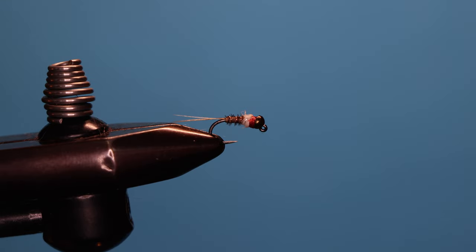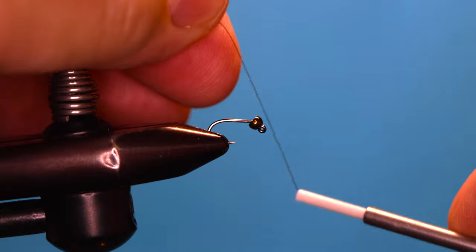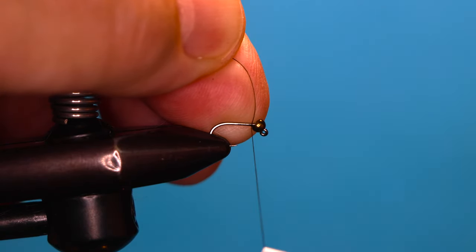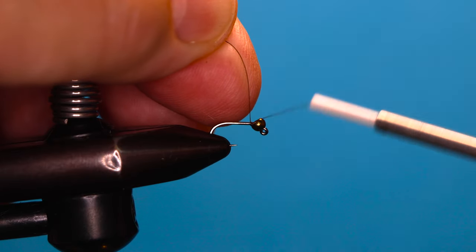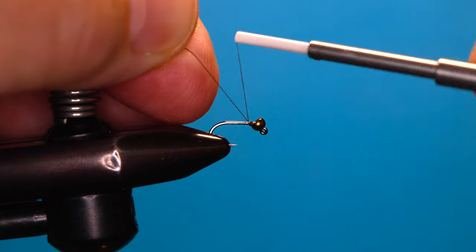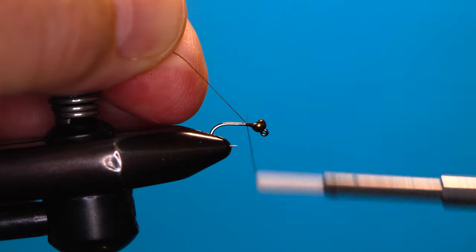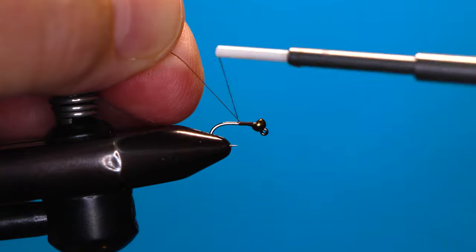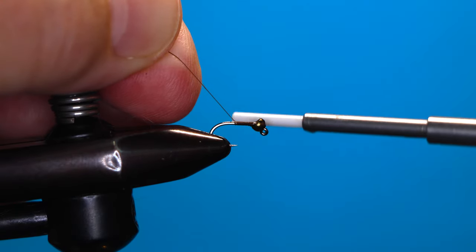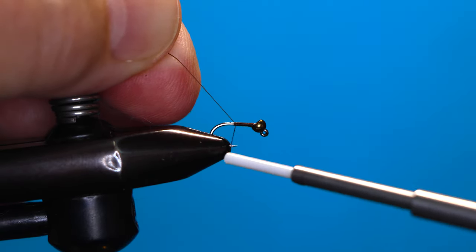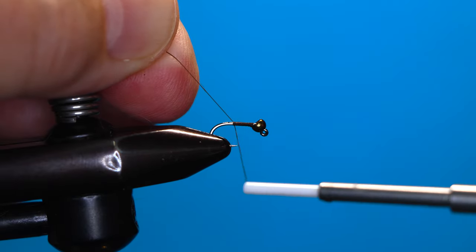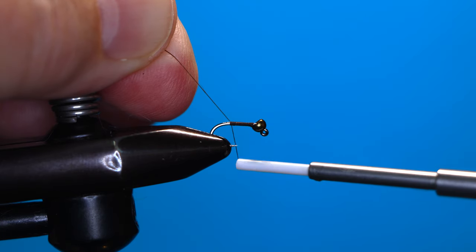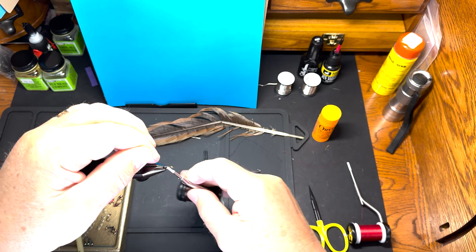Here's how you make this fly. I've got a number 18 jig style hook and a bronze colored bead. I'm going to use brown thread to start out with and make a good tight thread body all the way to the back. The reason I'm not using red to start with is I don't want the red showing through the pheasant tail body, so I'll use brown and then switch over.